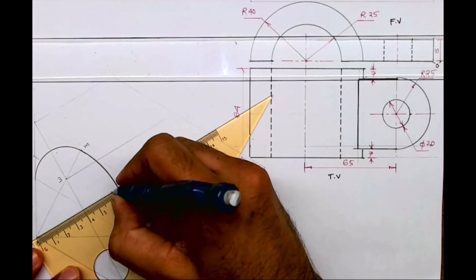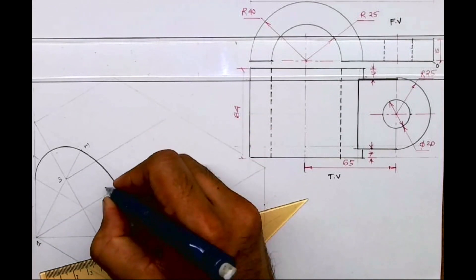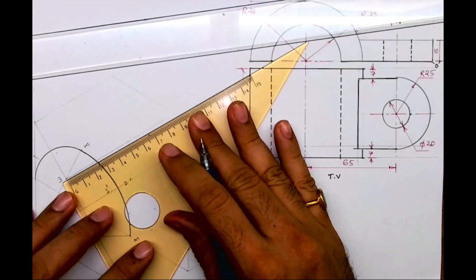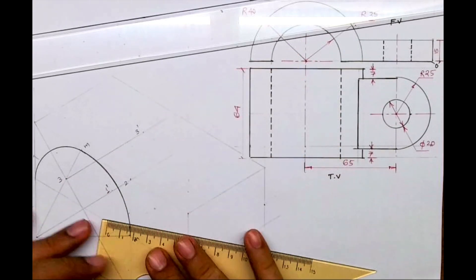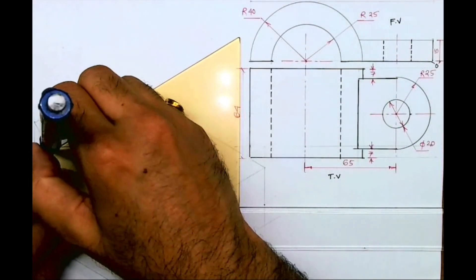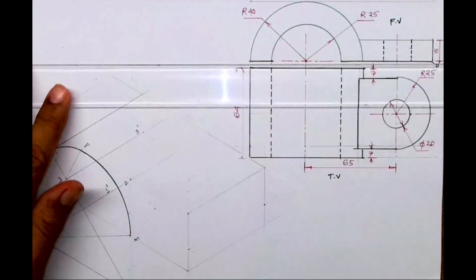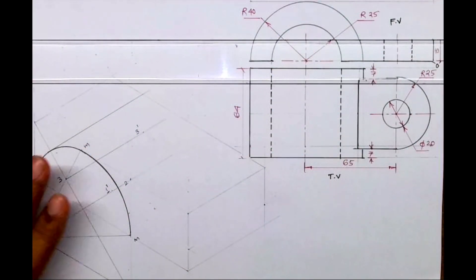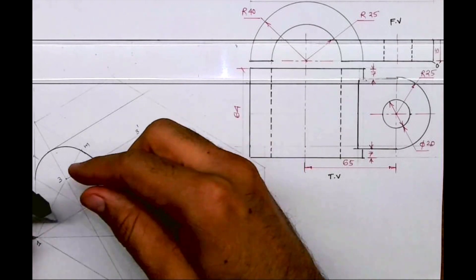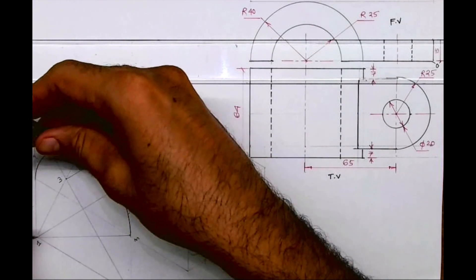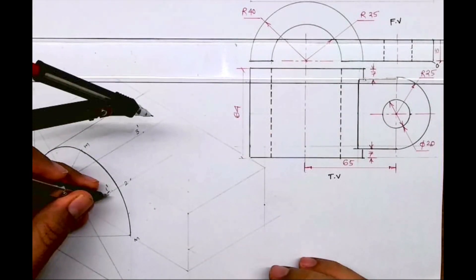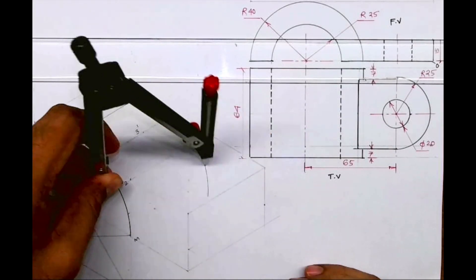So from one we will cut 64, that will be one dash. From three, 64, three dash. Now we will take the previous radius and we will draw arc. And we will draw tangent from here. See this, you take one to M and you draw arc. You go behind by 64, that is one dash, and you draw arc.